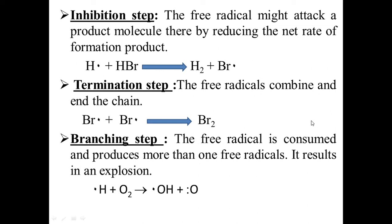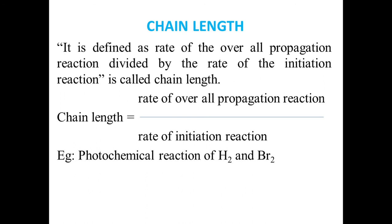Next we'll come to chain length. Chain length is defined as the rate of the overall propagation reaction divided by the rate of the initiation reaction. An example is the photochemical reaction of H₂ and Br₂. In the next class we'll discuss chain transfer reaction and kinetics of branching reaction.